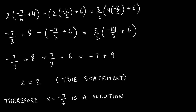Now distributing the negative and the 3/2: negative times a negative makes a positive, and negative times positive 6 makes negative 6. The three in 3/2 cancels with the three in the denominator. 2 goes into negative 14 negative 7 times, leaving just negative 7. For 3/2 times 6, 2 goes into 6 three times, so 3 times 3 is 9.